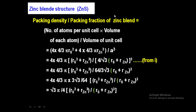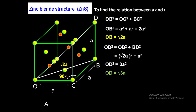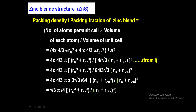The packing fraction formula is: number of atoms per unit cell × volume of each atom, divided by volume of unit cell. There are 4 sulfur atoms and 4 zinc atoms per unit cell, with different radii. We consider them separately: 4 × (4/3)πRₛ³ for sulfur atoms plus 4 × (4/3)πR_Zn³ for zinc atoms, all divided by the volume of the cubic unit cell a³.